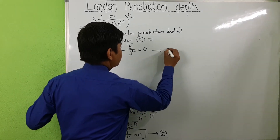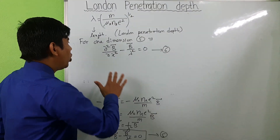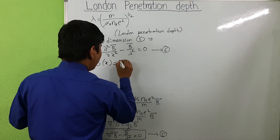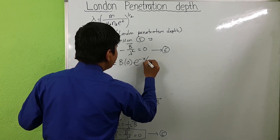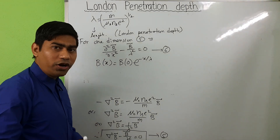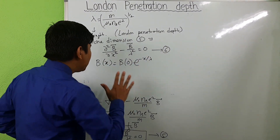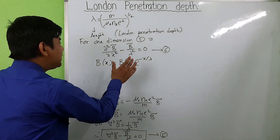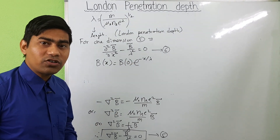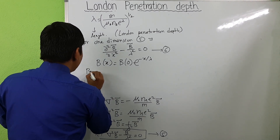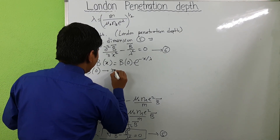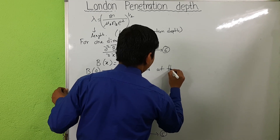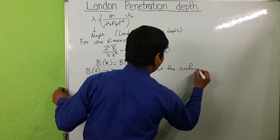The solution of equation six can be written as B(x) equals B_0 times e to the power of minus x over lambda. Here B_0 is the magnetic field at the surface of the superconductor.